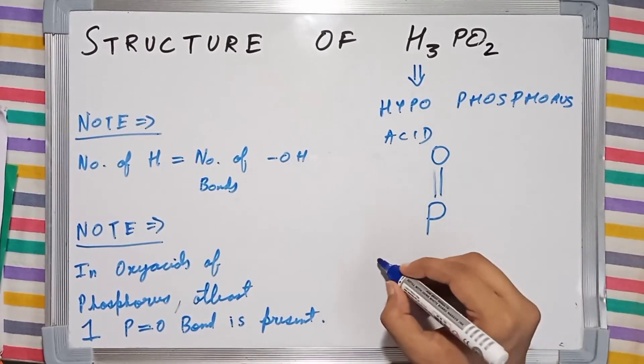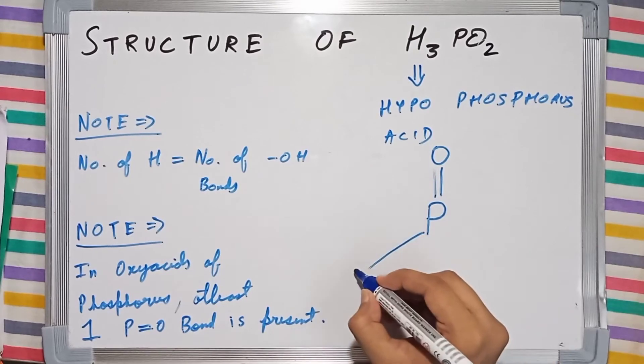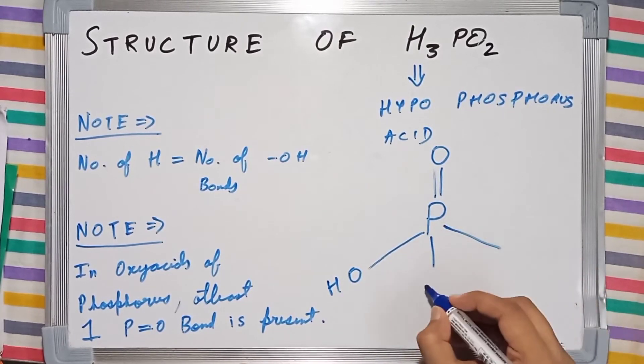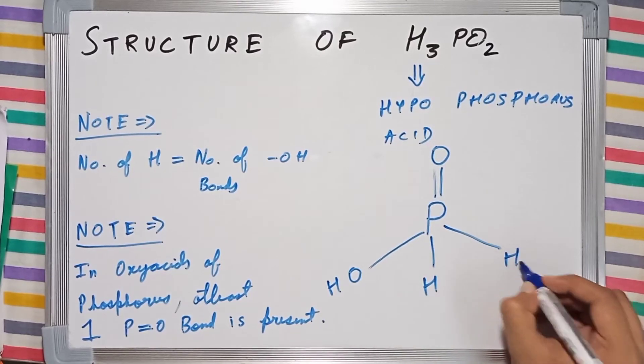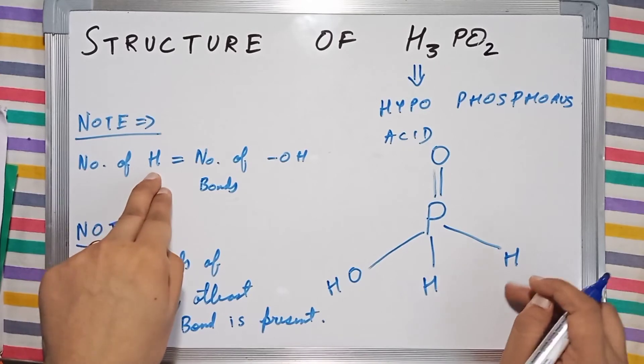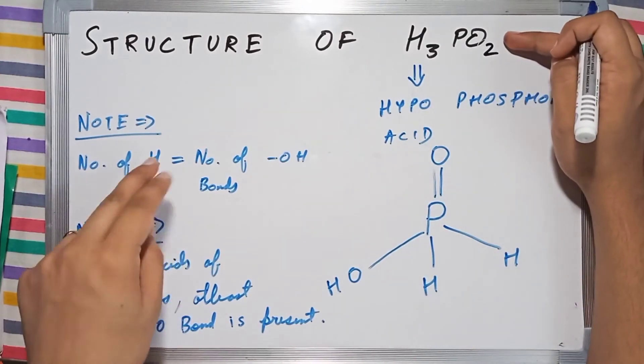So we are going to draw one OH bond, and the two remaining bonds will have just two hydrogens, since we just had a single oxygen atom left with us.